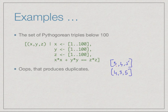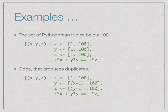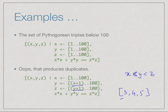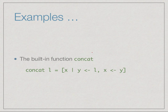We get duplicates like 3,4,5 and also 4,3,5, which are essentially the same triple in a different order. To avoid this, we can be more careful in our generators: since generators can depend on earlier values, we require x < y < z. So x runs from 1 to 100, but for each x we only check y's from x+1 onwards, and z's from y+1 onwards. This gives a set of triples without any duplicates.